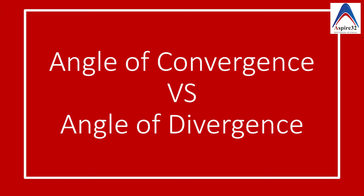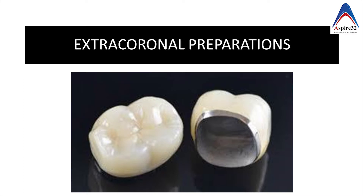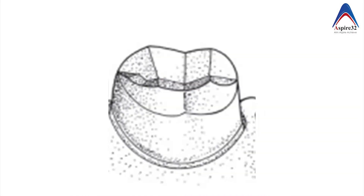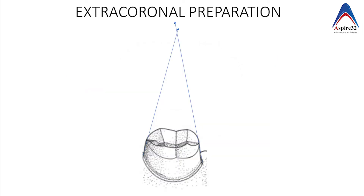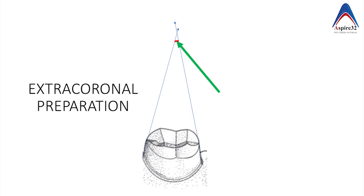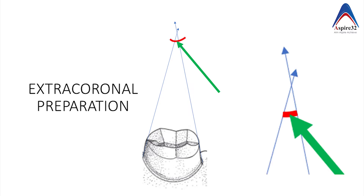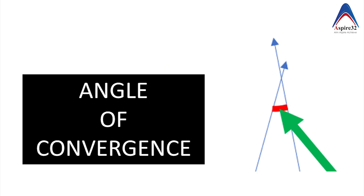The preparations which are meant for extracoronal restorations — for example, crowns — also have a taper. In this image you can see that the mesial and the distal walls are convergent towards the occlusal surface, and if you project these two lines they will meet at a specific point and form an angle.